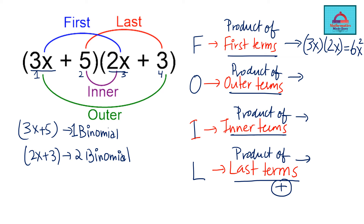Now let's take the product of the outer terms. For outer terms you have the outside term of the first and the outside term of the second. So 3x multiplied with 3 gives you 9x.